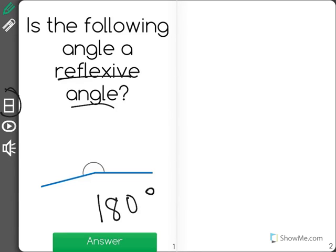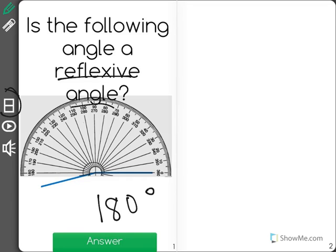I'm going to get out a protractor to help look at this problem. Now as you can see, a straight angle would have a measurement going all the way across and equal to 180 degrees.